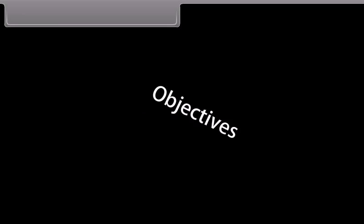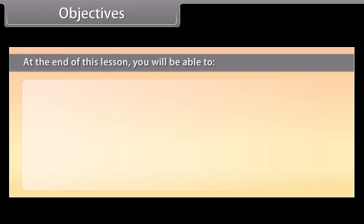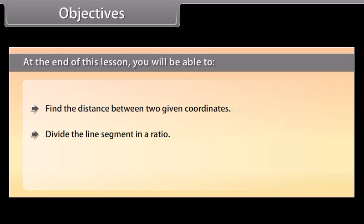Objectives. At the end of this lesson, you will be able to: find the distance between two given coordinates, divide the line segment in a ratio, and find the area of a triangle when its vertices are given.